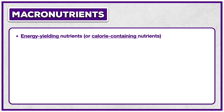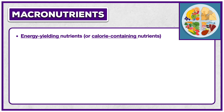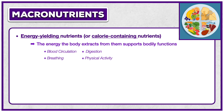Zooming in on macronutrients, we see that they are energy-yielding nutrients. That energy is measured in calories, so another way of putting it is that macronutrients are calorie-containing. Carbohydrates, protein, and fat all contain energy in the form of calories. We consume foods and beverages that contain them, and our body is able to extract the energy and use it. The energy the body extracts from them supports bodily functions like blood circulation, breathing, digestion, and physical activity.